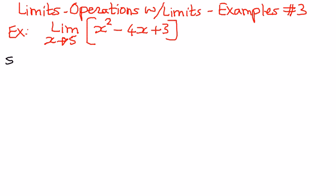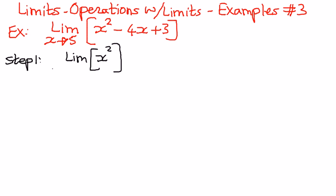So the way we want to solve this problem is as follows. We'll write it down in these different steps. We will break down this polynomial function into individual functions. So we'll write it out as the limit of the first function, which is x² as x approaches 5.